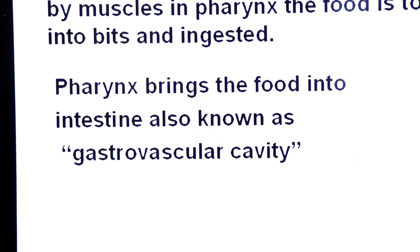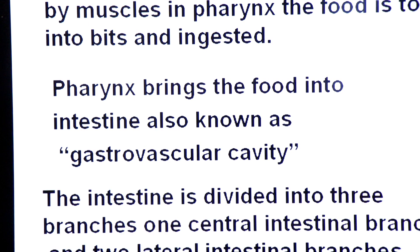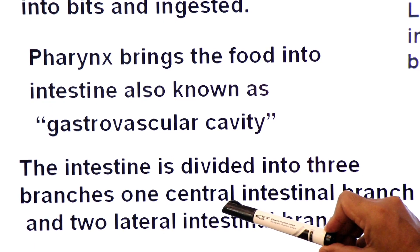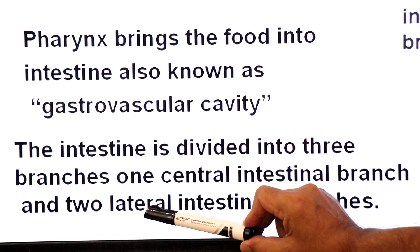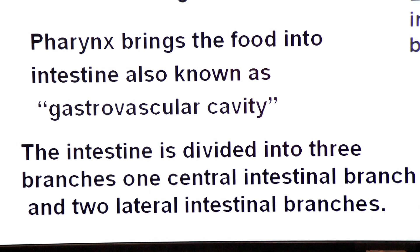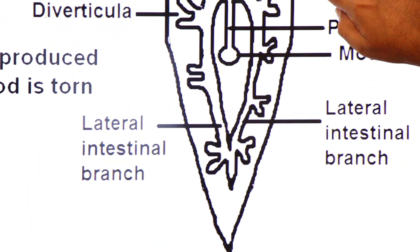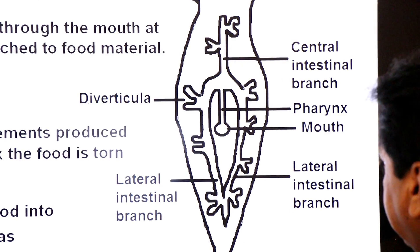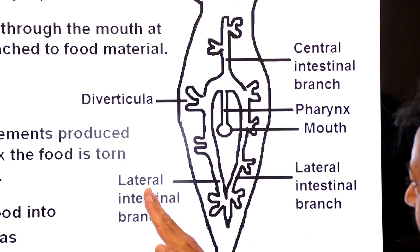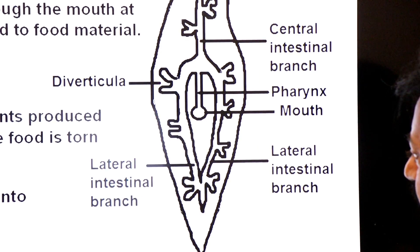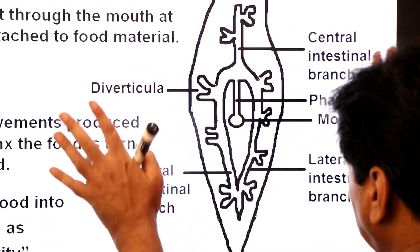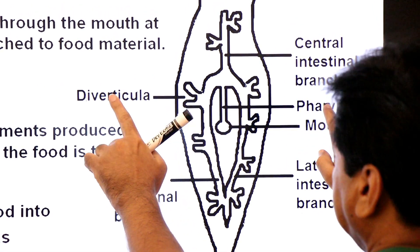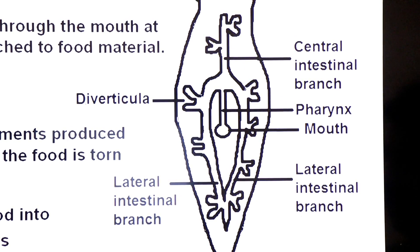The pharynx brings the food into the intestine, also known as the gastro-vascular cavity. The intestine is divided into three branches: one central intestinal branch that goes upward, and two lateral intestinal branches that come downward. From all three branches, smaller branches — called diverticula — arise and increase the surface area.